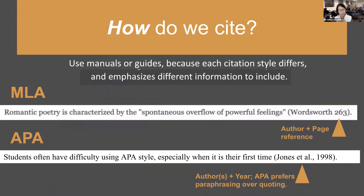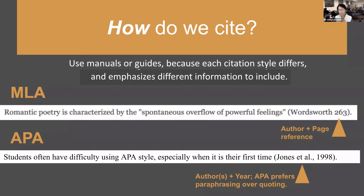How do we cite? You use manuals or guides because each citation style differs and emphasizes different information. For example, in MLA, a parenthetical citation looks like: 'Romantic poetry is characterized by the spontaneous overflow of powerful feelings' (Wordsworth 263). What MLA wants to see is the author and the page reference — just the author and page number in the parenthetical citation.